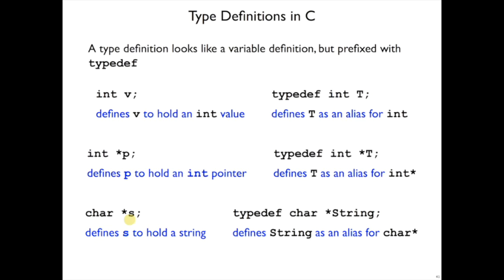Or here's another example. char star s would declare s to be a variable to hold a string. So we could say typedef char star String, and that would make String an alias for char star.